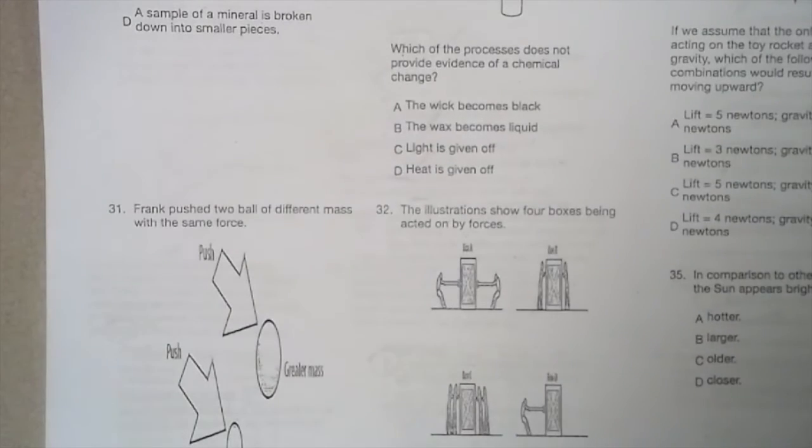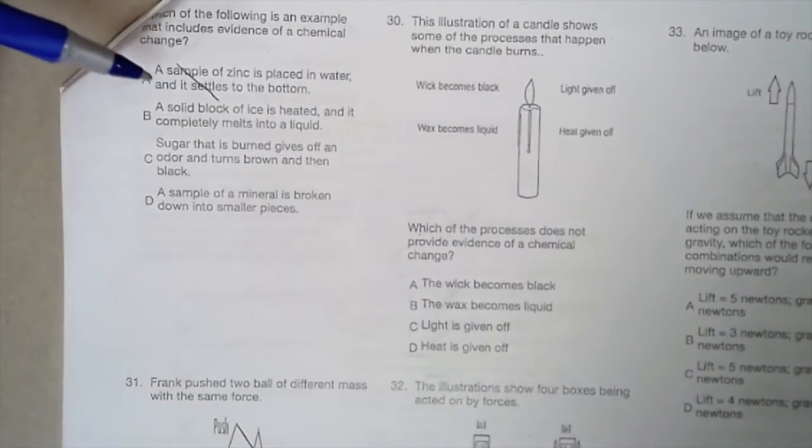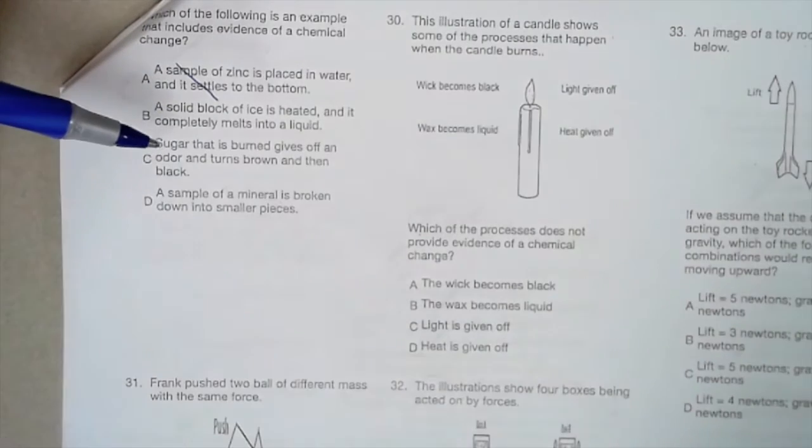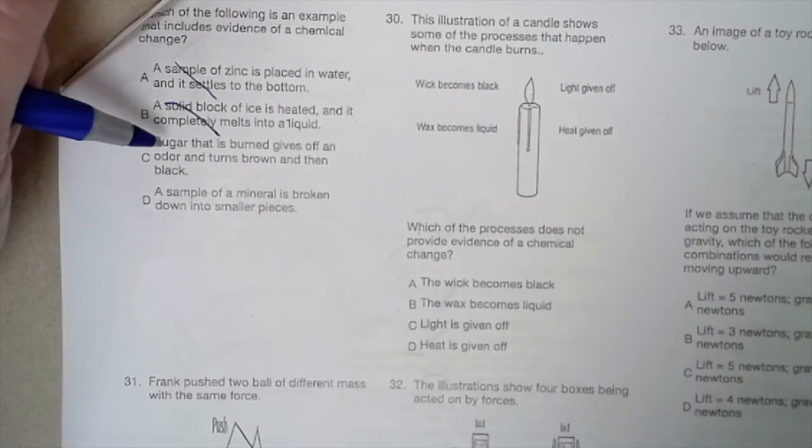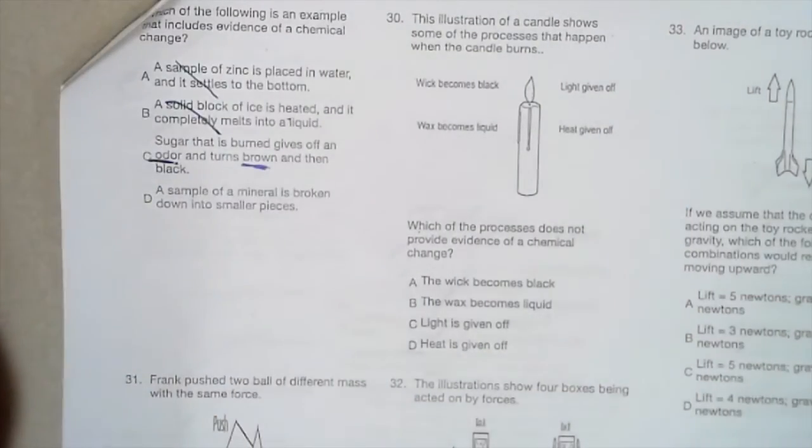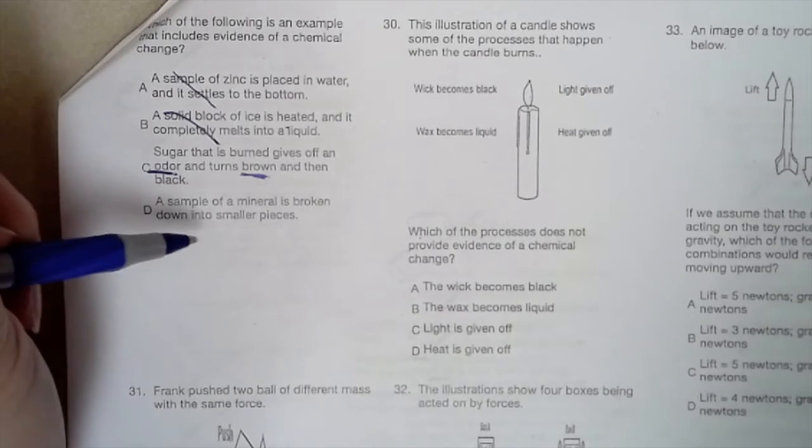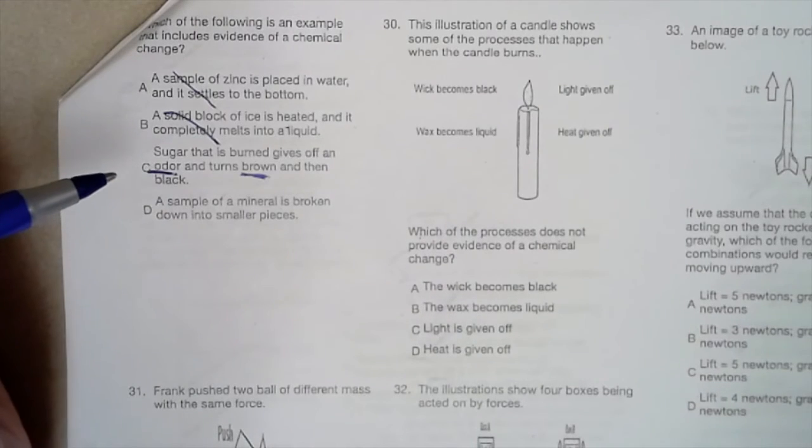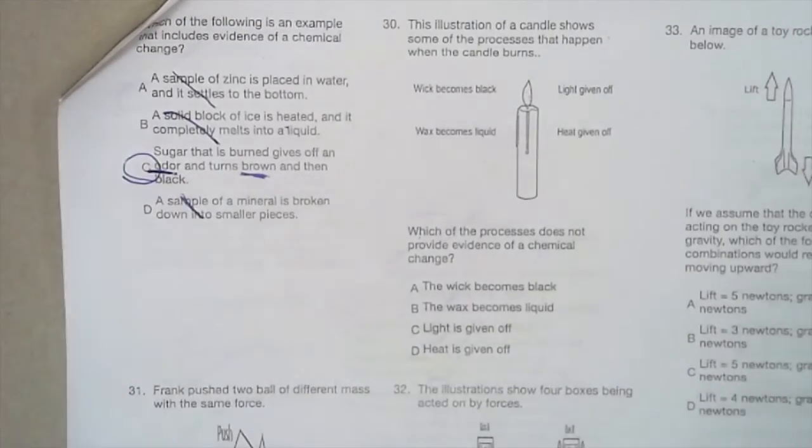Which of the following is an example that includes evidence of a chemical change? A sample of zinc is placed in water and settles to the bottom. Was there something new? No. A solid block of ice is heated and it completely melts into a liquid. Still water as a solid or a liquid. It's still water. So it's nothing new. Sugar that is burned gives off an odor and turns brown and then black. We have a smell and we have a color change. That sounds chemical to me. A sample of a mineral is broken down into smaller pieces. That's like tearing a piece of paper. Still paper. Still the same mineral, just smaller. So letter C is an example of a chemical change.